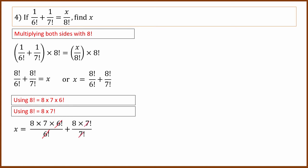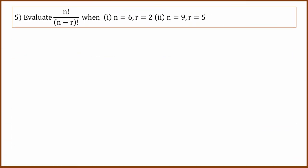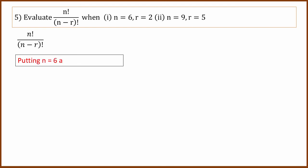That will cancel. That will cancel. That will cancel. The answer is 28. The question answer is 28. This answer is 28. NPR formula: 8 factorial divided by 2 factorial equals 6 factorial times 4 factorial, which will cancel to give 4 factorial.